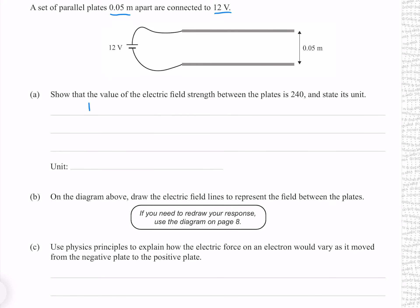We know that the electric field strength is voltage over separation, where we know both values. This gives 240, and because we have units of volts divided by units of metres, our units are volts per metre — though you could also write newtons per coulomb.